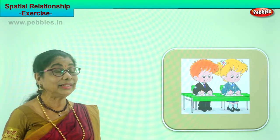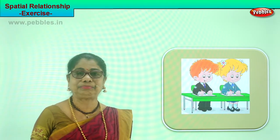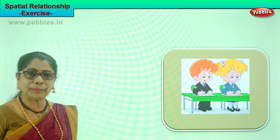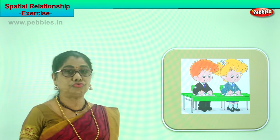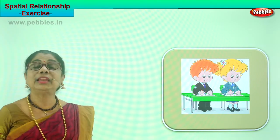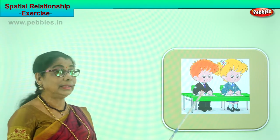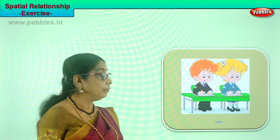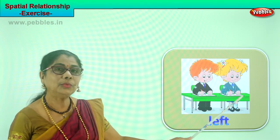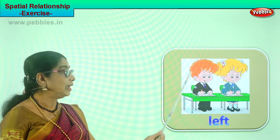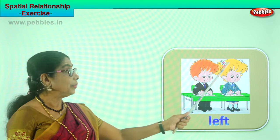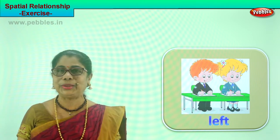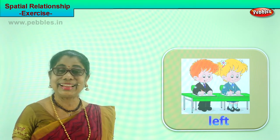What are we learning? Spatial relationships. Now we have two little children sitting here. In the class you are all sitting in a row, two by two or four by four, one behind the other. There is a little girl and a little boy. Where is the girl sitting? The girl is sitting on the left side of the boy. And where is the boy sitting? The boy is sitting on the right side of the girl.